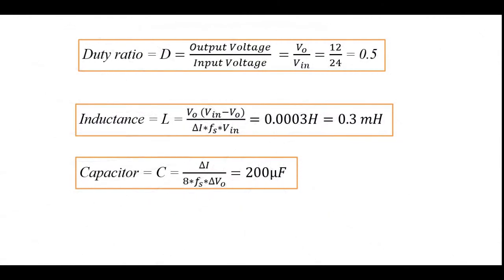First, we need to calculate the duty ratio for the buck converter. The duty ratio is based on this formula and equals 0.5. Now we require to calculate the value of the inductance based on this formula, which equals 0.3 millihenry. Finally, we need to calculate the value of the capacitor based on this formula, which equals 200 microfarads.